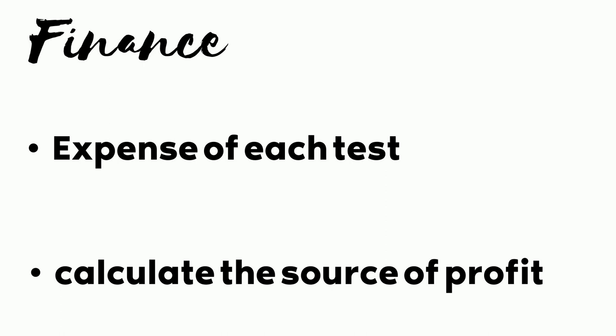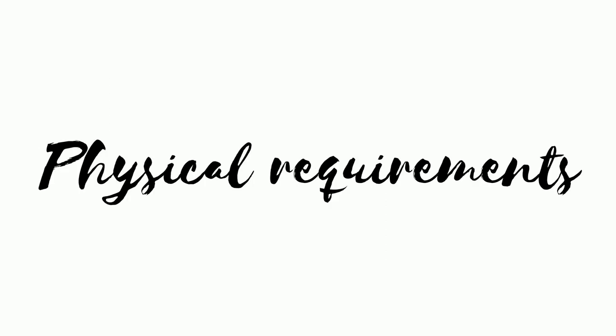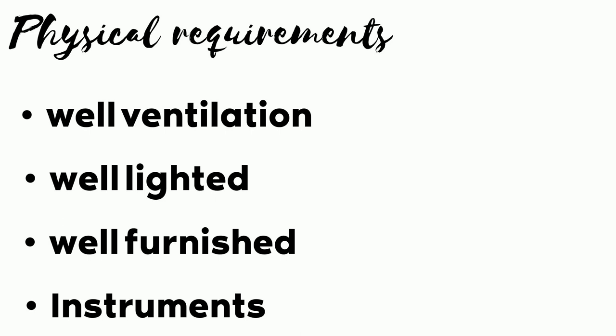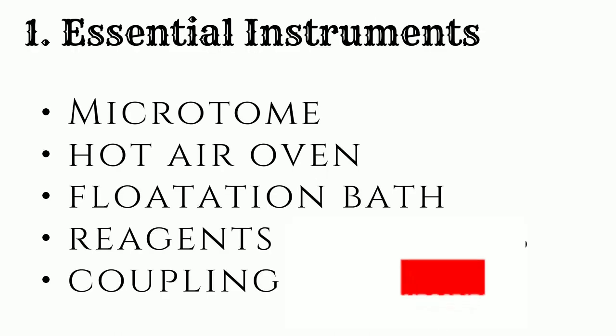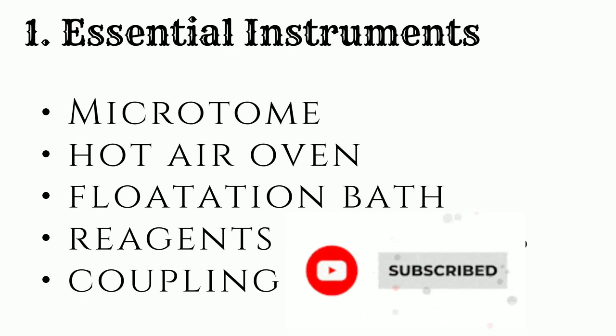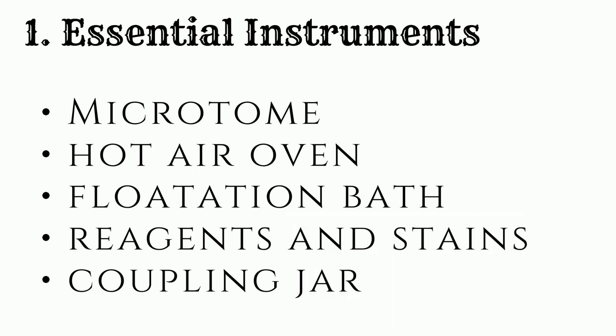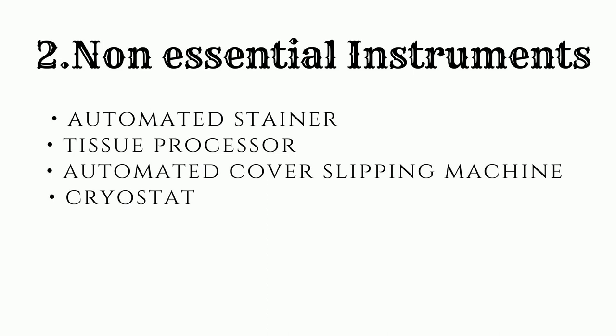Physical requirements of a lab mean it must be well ventilated, well lighted, and well furnished, with specific instruments. There are two types of instruments: essential and non-essential. Essential instruments include a microtome, water oven, flotation bath, reagents, stains, and coupling jars. Non-essential instruments include a tissue processor, automated stainer, automated coverslipping machine, and cryostat.